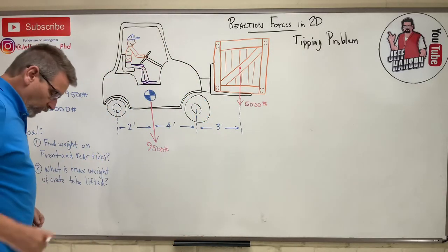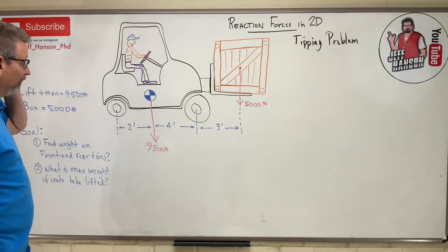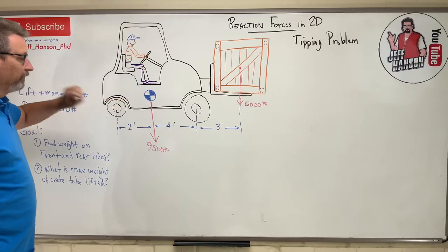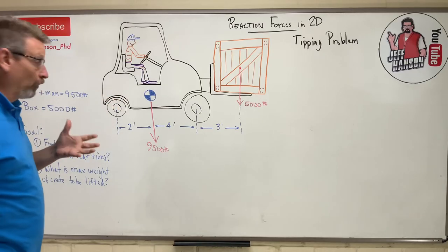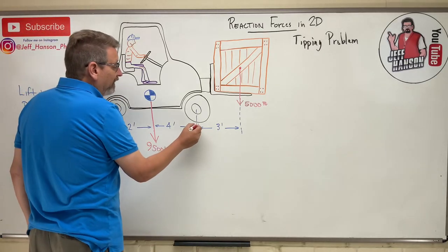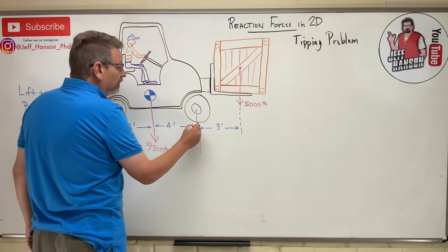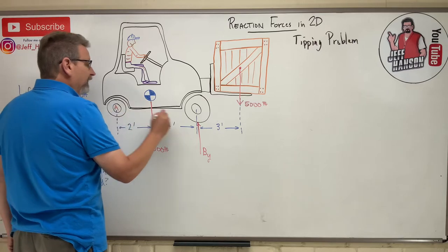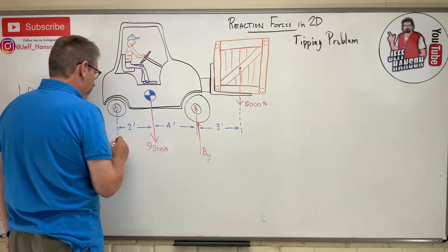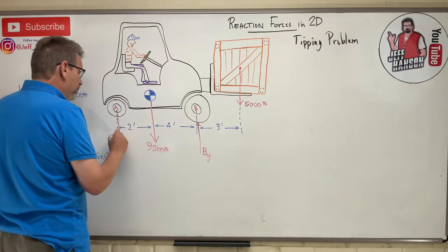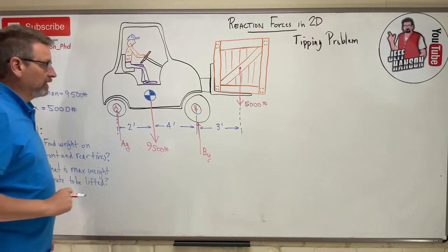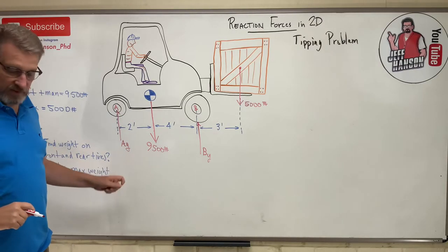Now what else is going on? How about the reactions at the wheels? Okay, now where the wheel touches the ground, you might as well think of that as a roller. Okay, so what you have, we'll call this By and we'll call this Ay. This is wheel A, this is wheel B. Okay, we'll call this guy Ay.